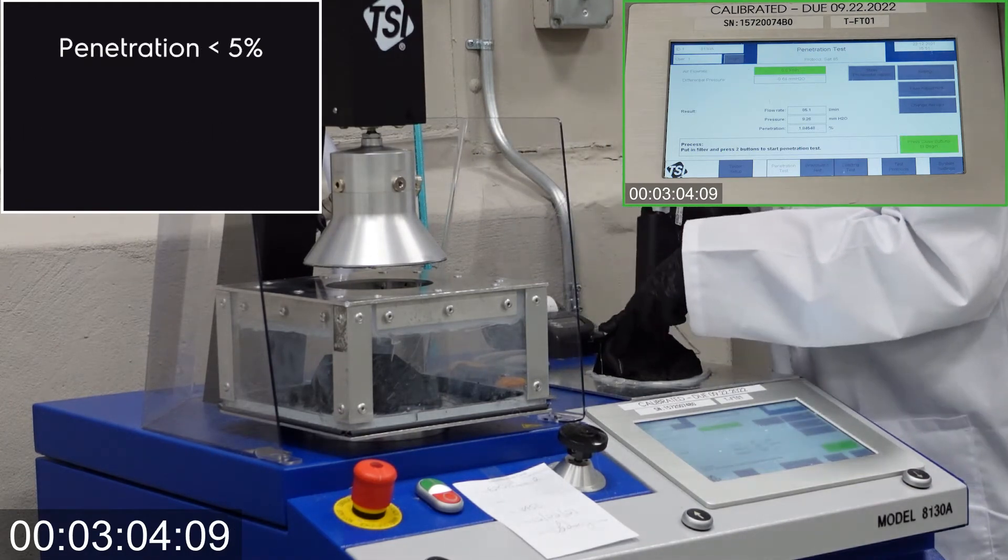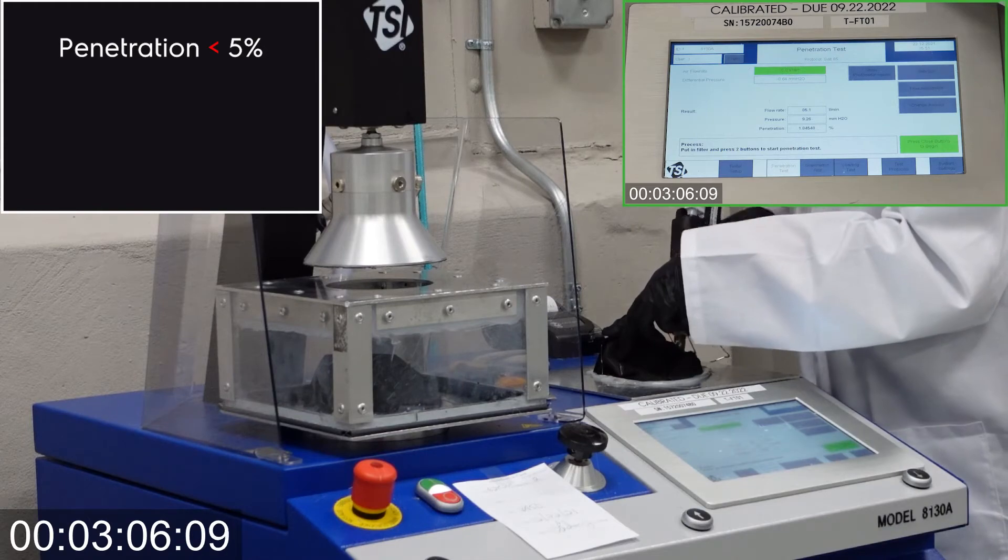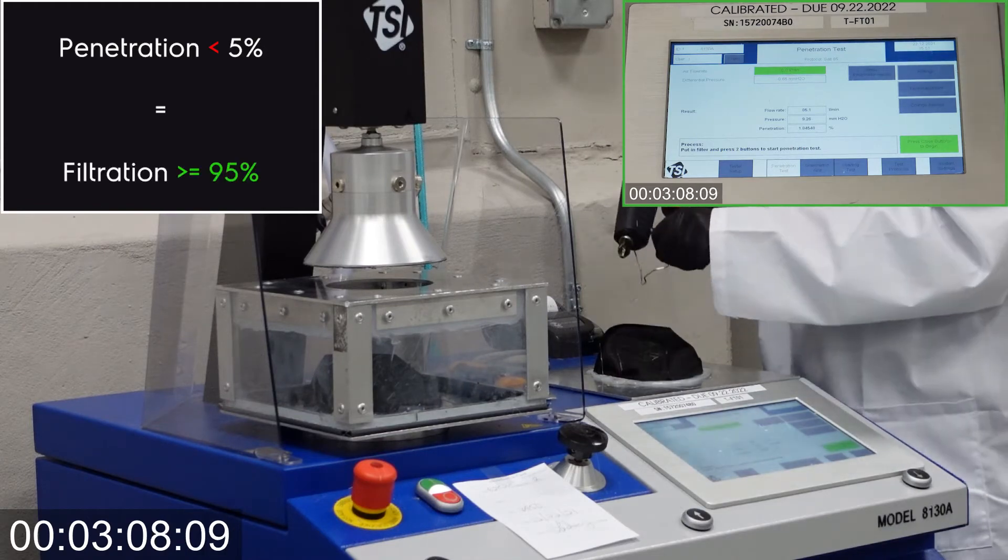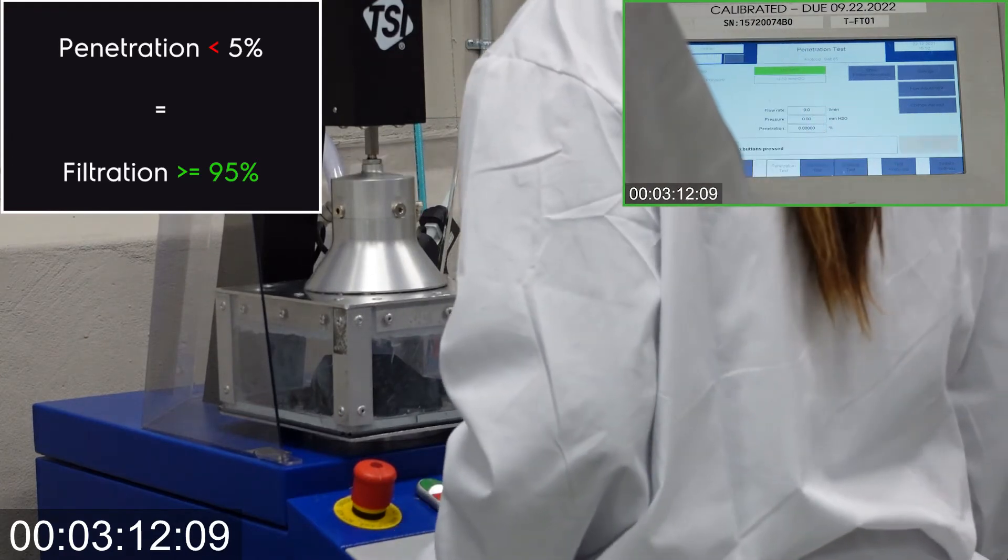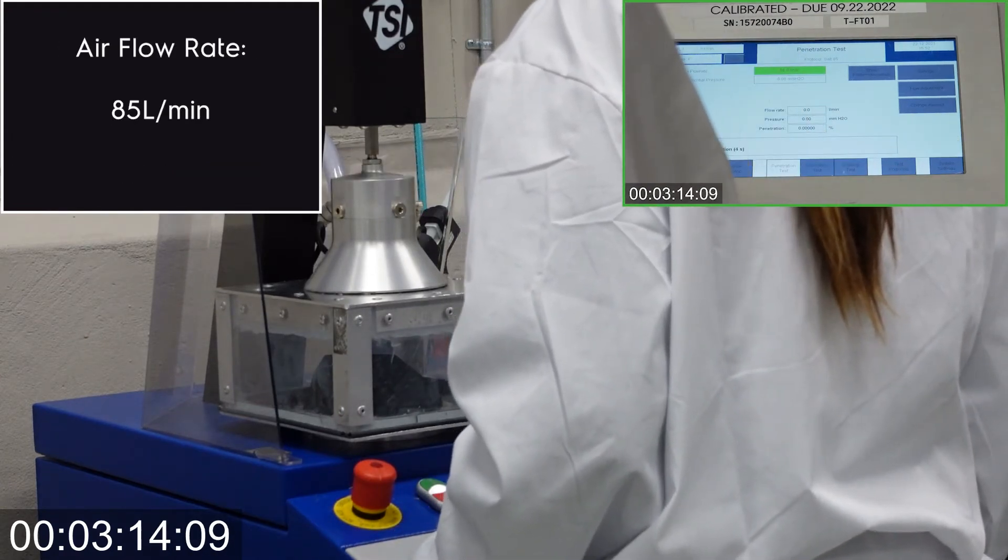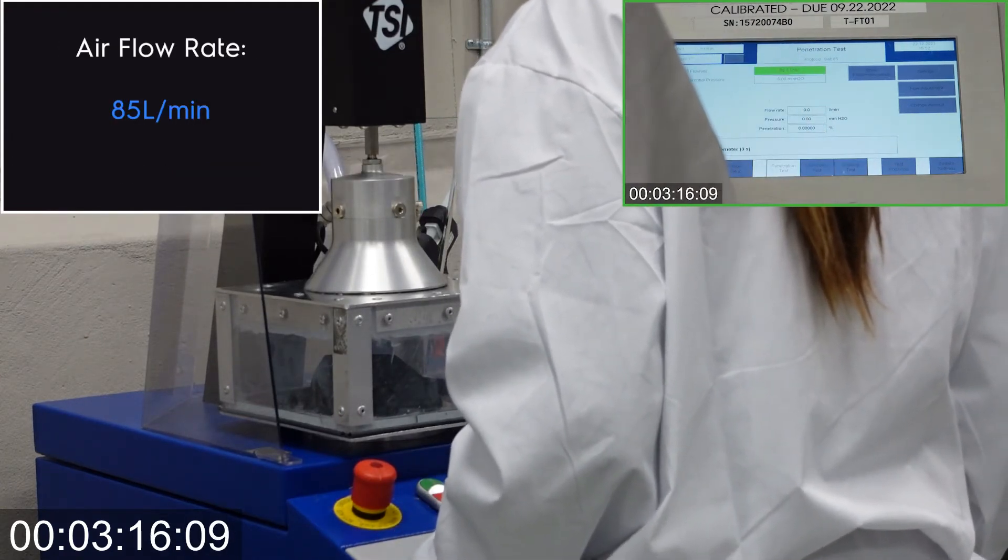Penetration results should never exceed 5%, which is the same as saying filtration efficiency should never be less than 95%. Masks are tested using an airflow rate of 85 liters per minute.